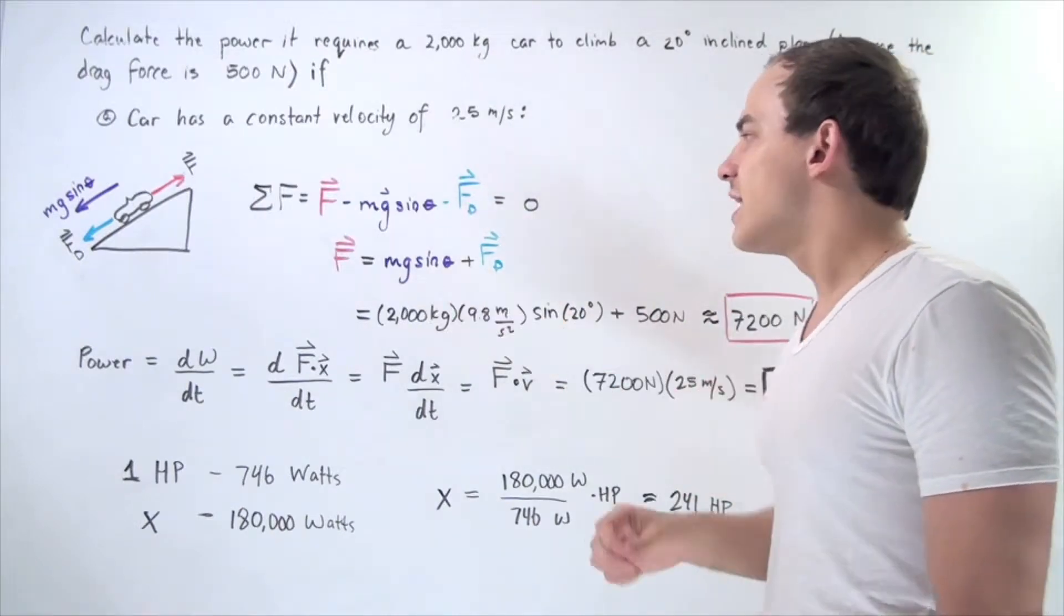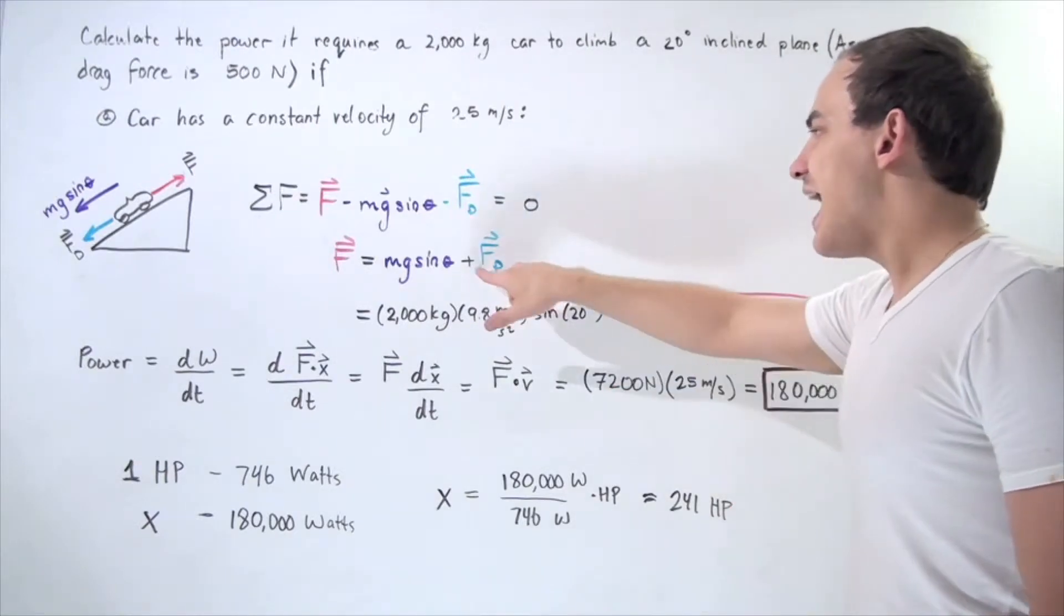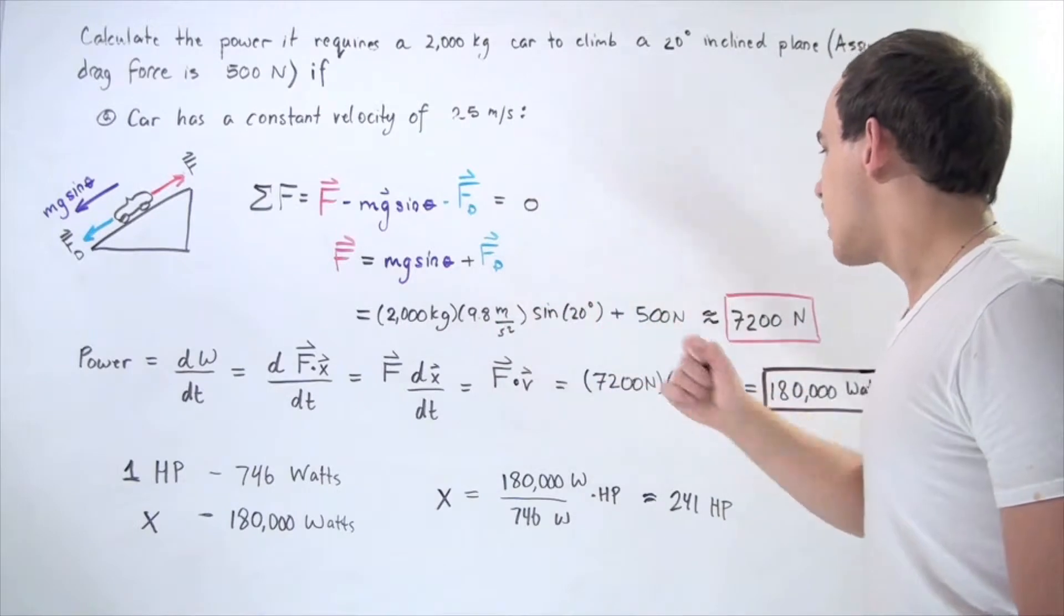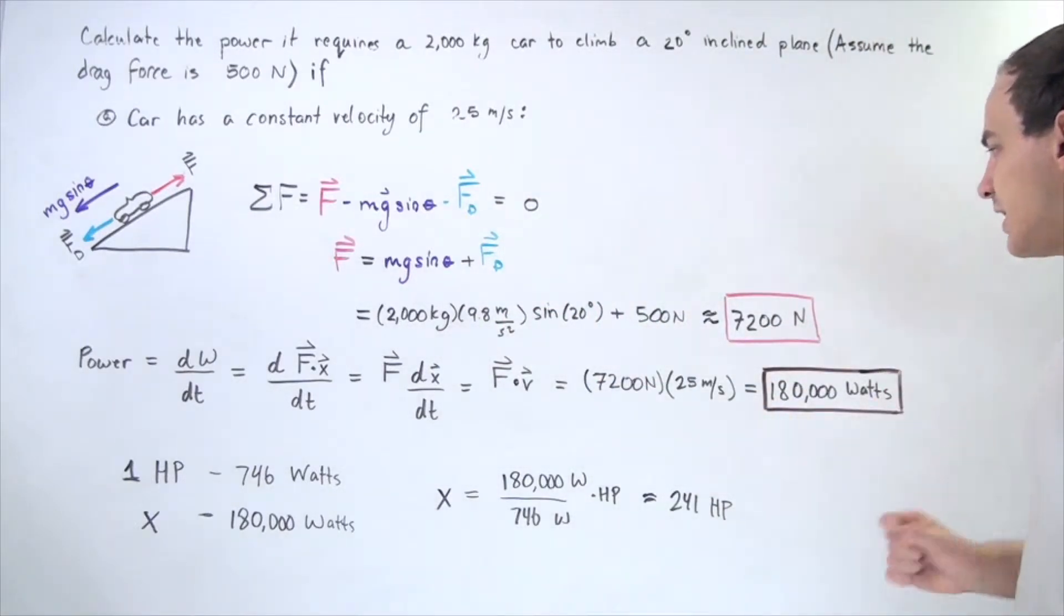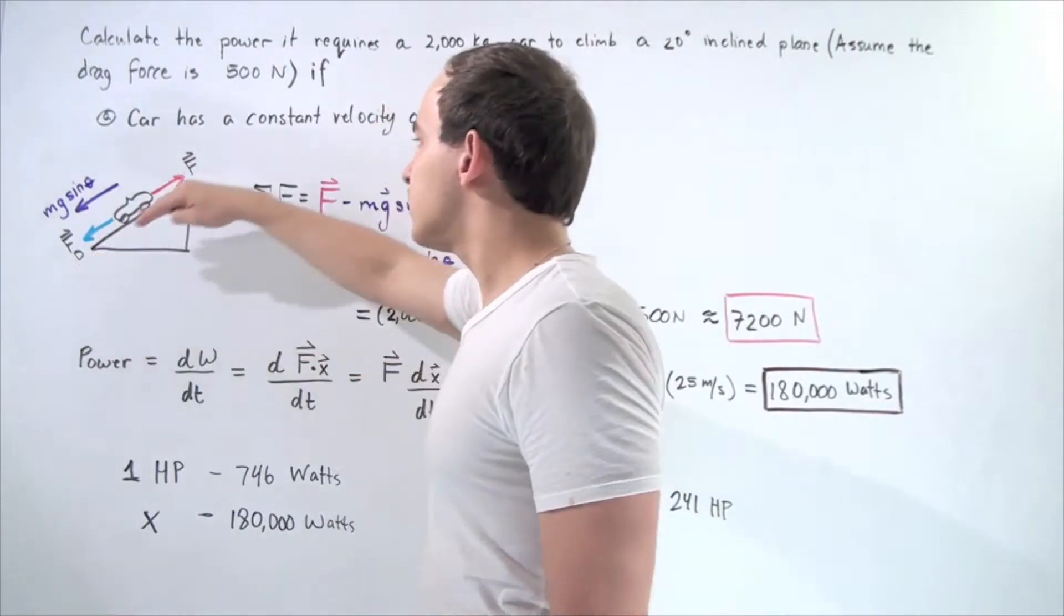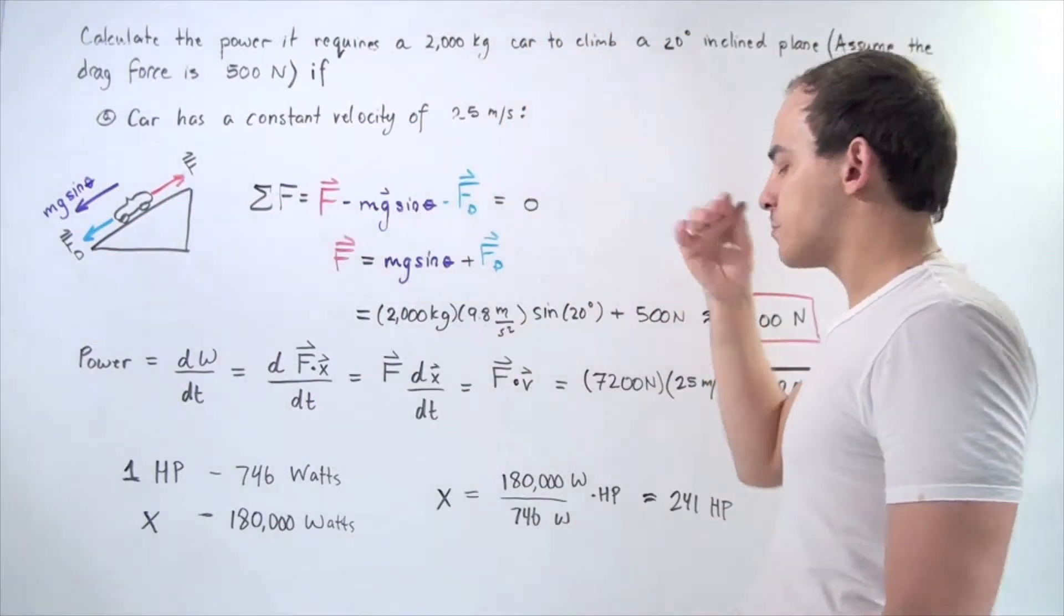We plug in our mass, we plug in our g, we plug in our theta, our angle 20 degrees, and we plug in our 500 newtons. We multiply and sum up and we get approximately 7,200 newtons. This is the force required to move our car along the inclined plane with constant velocity of 25 meters per second.